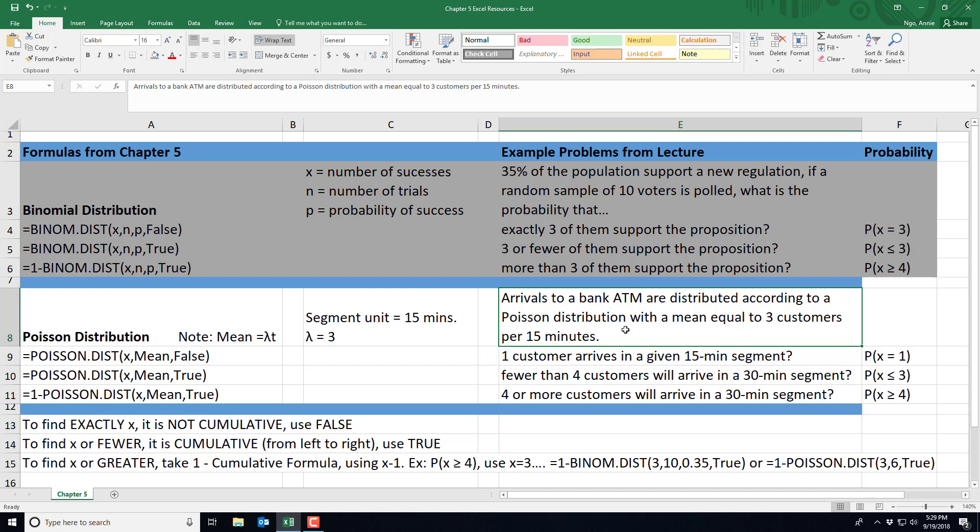So we want to make sure we understand all the components in the story so we can put the right information into our formulas. We know that our segment unit is every 15 minutes and that within a single segment we have a mean or average of three customers arriving.